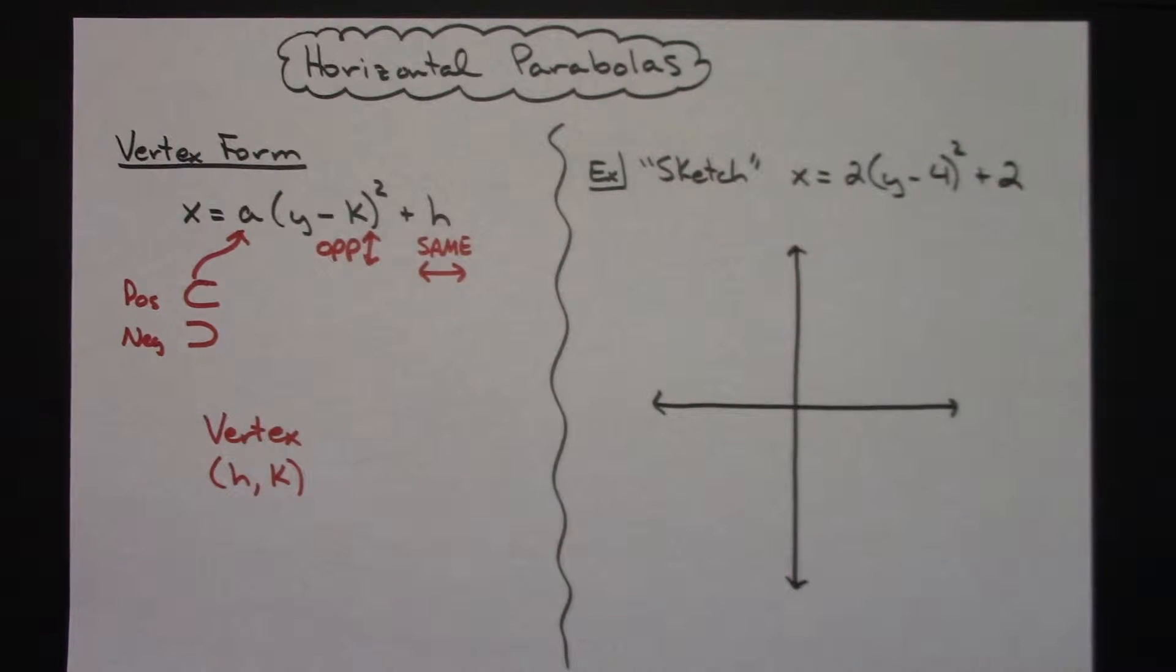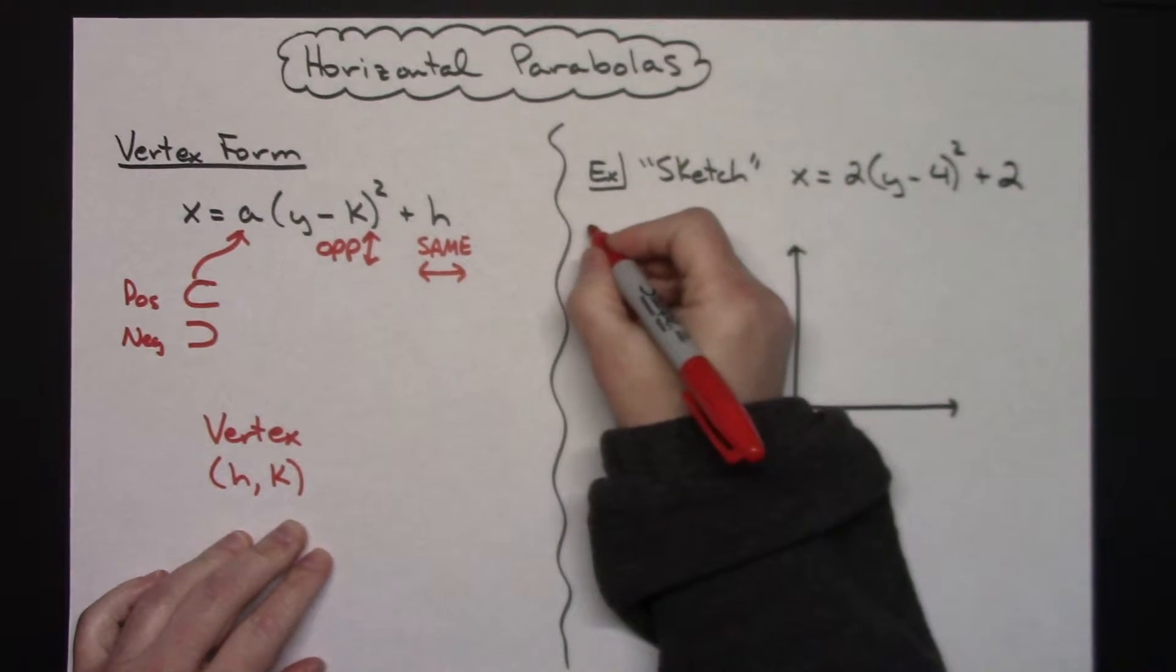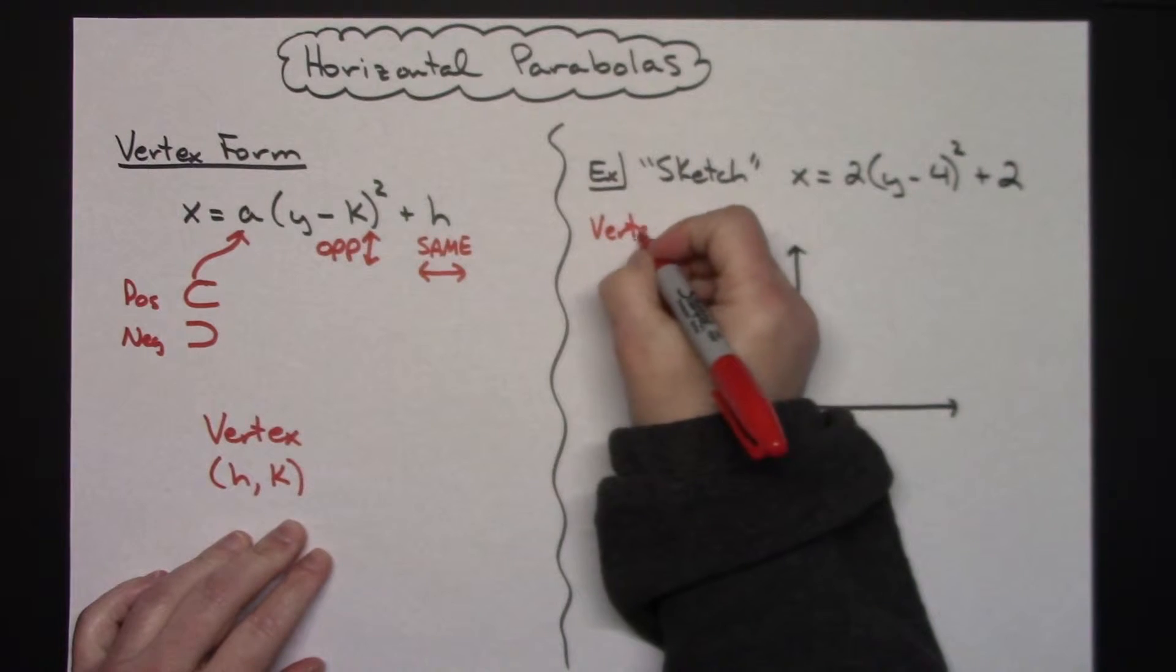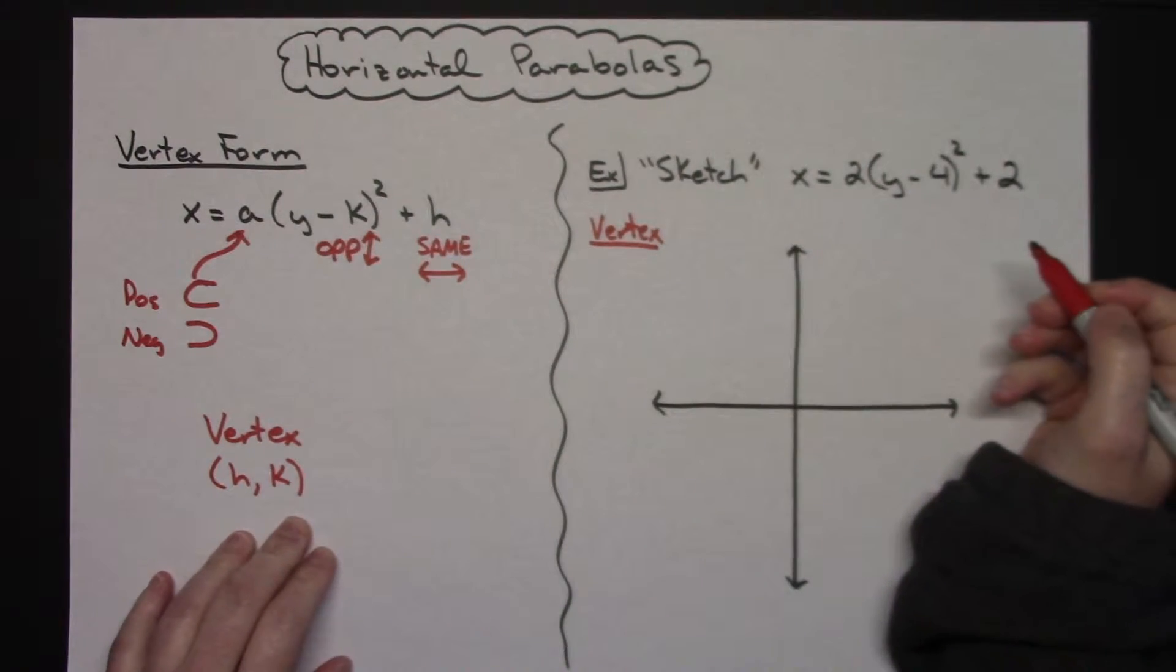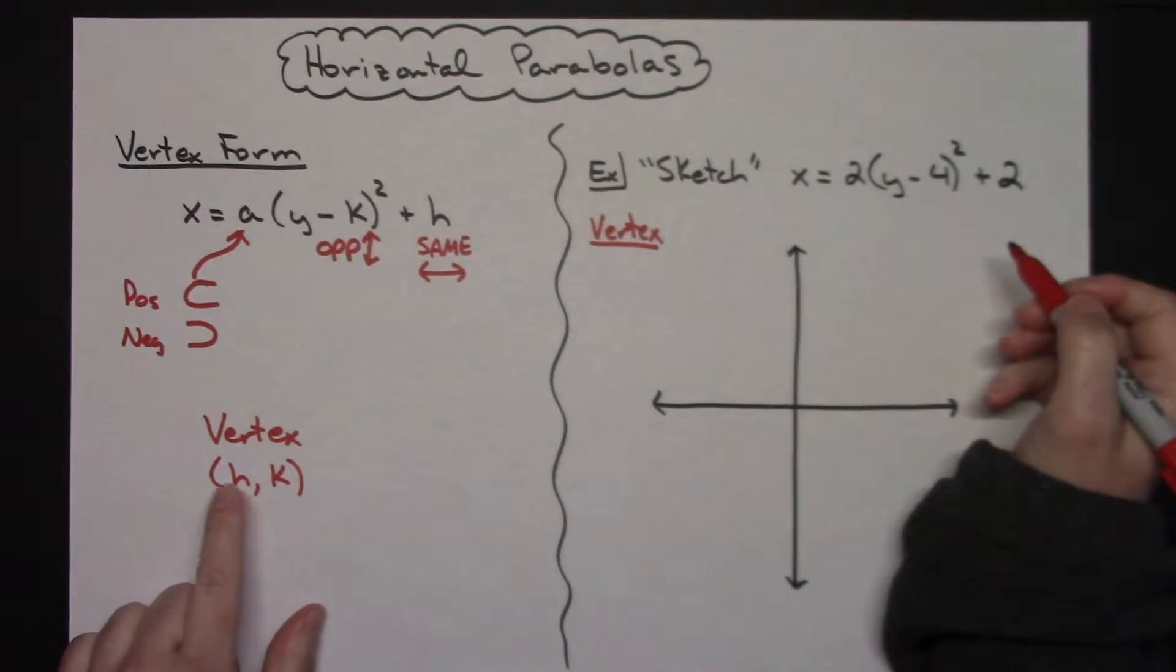Now, usually what I do not do is I don't generally pull out the vertex. However, with this being a horizontal one, it might not hurt us here. So if I want to take a look at my vertex here, this value out here will be my h.